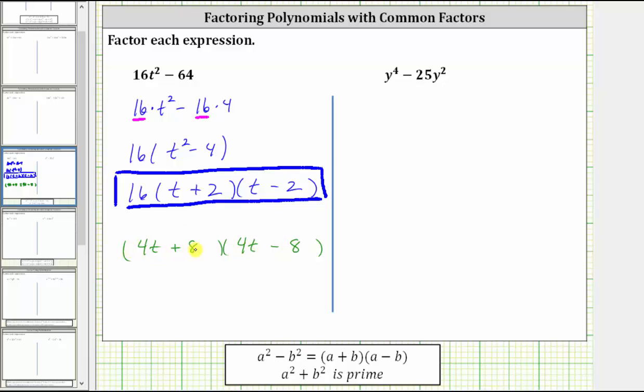To factor it correctly, we'd have to factor out four from this binomial, giving us four times the quantity t plus two, and factor out another four from this binomial factor, giving us times four times t minus two. Four times four is 16, giving us 16 times the quantity t plus two times the quantity t minus two.